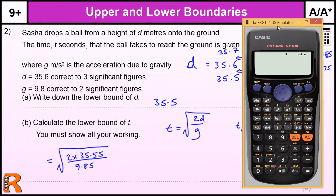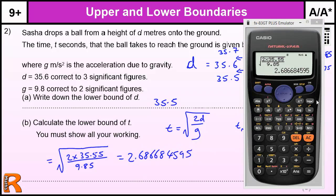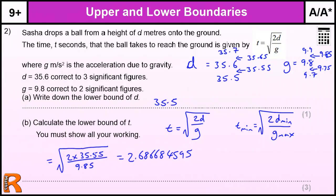And that will give us the smallest value of that. So we're going to do the square root of 2 times D min, which is 35.55, divided by G max, which is the bigger one, 9.85. Then we'll use the calculator to get the answer to that. So the square root of the fraction, 2 times 35.55 all over 9.85, and that gives us 2.686684595. I always write down exactly what the calculator tells you first, and then if you need to do any rounding, you can do that afterwards. But that's fine. You can just leave that answer.